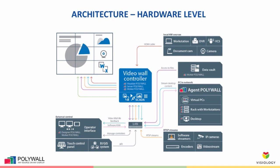The PolyWall platform itself consists of several components, each responsible for its own role. PolyWall Visualizer interacts with the video wall and displays content on it. PolyWall Worker provides access to files. PolyWall Agent is a KVM agent that allows you to manage a machine. PolyWall Server is the main component of the platform, responsible for the interaction of all components and overall central management of them.